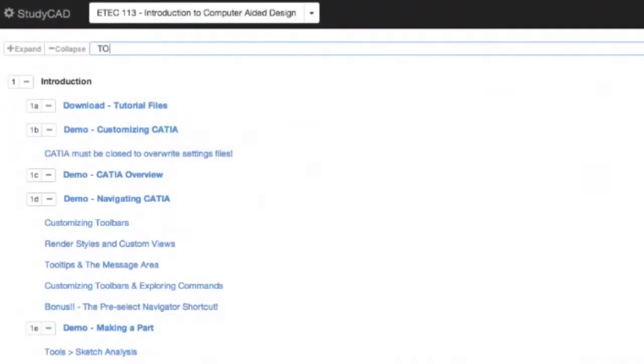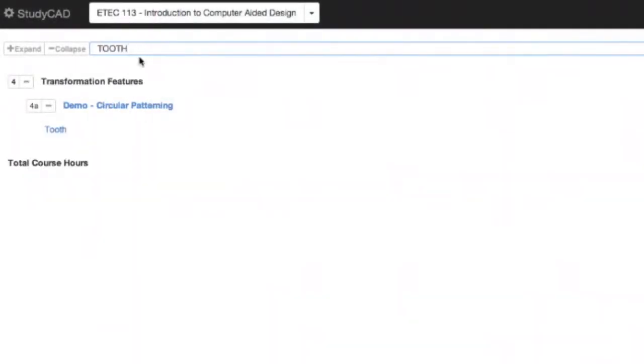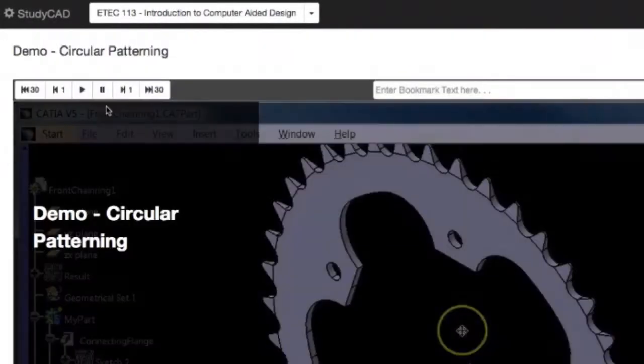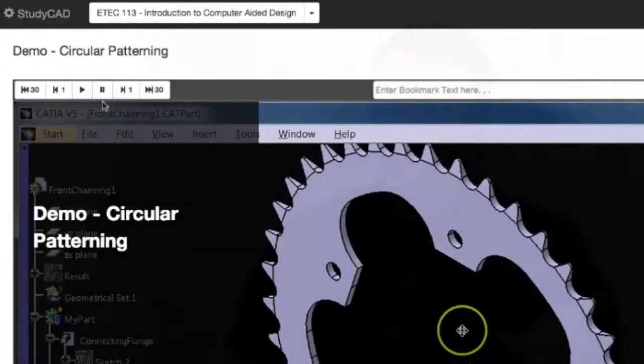And then finally, after the class, since all of the lectures are video based and we have this search ability, students can go back, they can type in a keyword, and they can access every moment in the class for the entire quarter. Like that's pretty amazing, to have a search feature on your university course and access any moment in an hour.